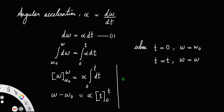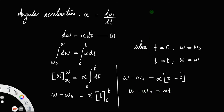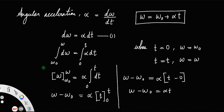So, this will be omega minus omega-zero is equal to alpha times: first substitute the upper limit t, then subtract the lower limit, t minus 0. So, omega minus omega-zero equals alpha·t, or omega equals omega-zero plus alpha·t. This is the first equation of rotational motion.